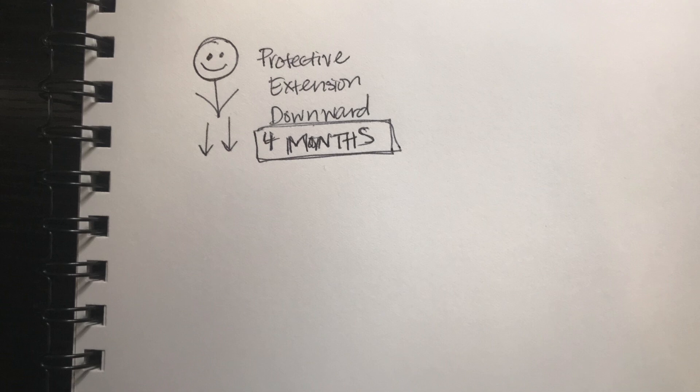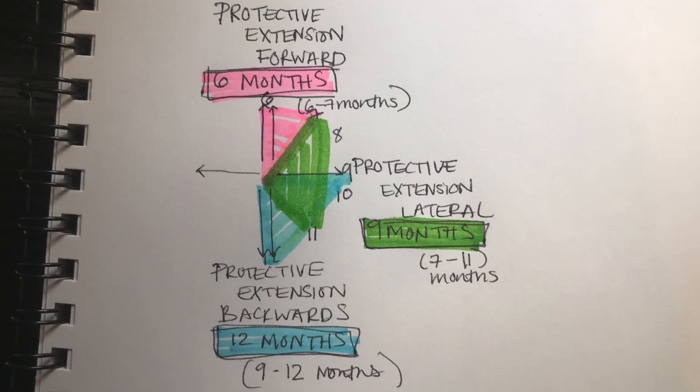Alright, so let's review all of them. The first one is the protective extension downward reflex, which typically appears around 4 months for a kid. Then the next one is your protective extension forward reflex, which should be present around 6 months. The protective extension lateral reflex should be present around 9 months. And then the last one is your protective extension backward reflex, which should be present around 12 months.